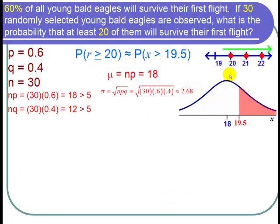In terms of the picture, the mean is 18, we have a normal distribution, and we want the probability that we're greater than 19.5, so we shade the region to the right of 19.5.